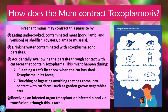Pregnant moms may contract this parasite by eating undercooked contaminated meat such as pork, lamb, venison, or shellfish like oysters, clams, or mussels. They can also contract the infection by drinking contaminated water containing Toxoplasma gondii parasites, or by accidentally swallowing the parasite through contact with cat feces — for example, when cleaning out a cat's litter box, or touching anything that has come into contact with cat feces such as garden-grown vegetables. In rare cases, the mom may also contract it through an infected organ transplant or blood transfusion.